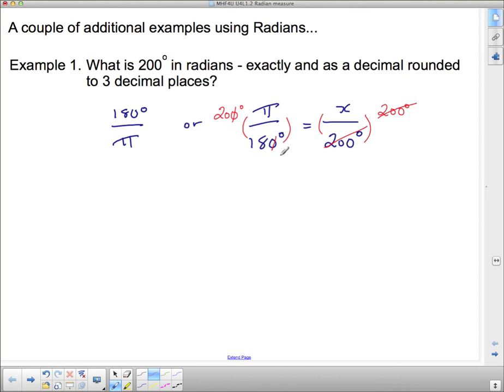And then what goes into both 20 and 18? Well, 2 goes into 20 ten times, and 2 goes into 18 nine times. And so now those have been reduced. So what we have here is 10 pi by 9.